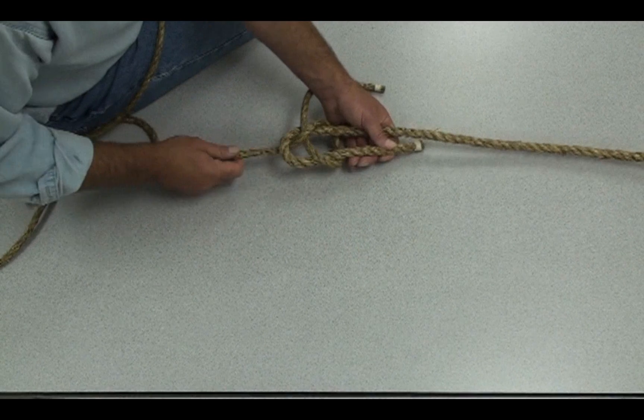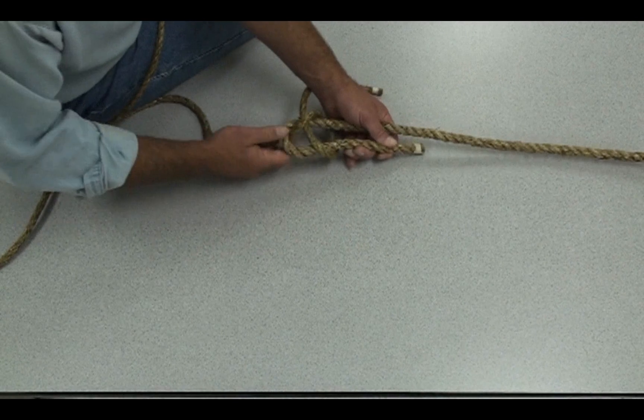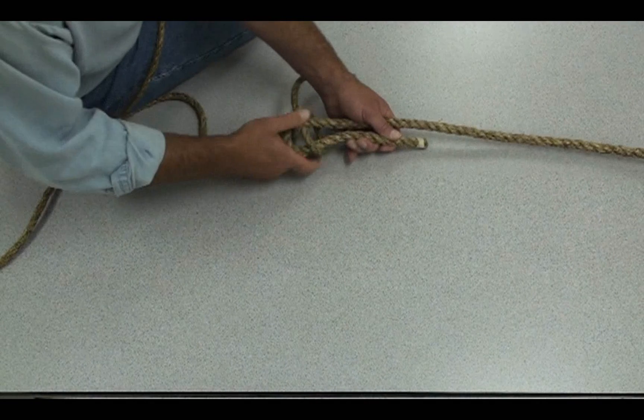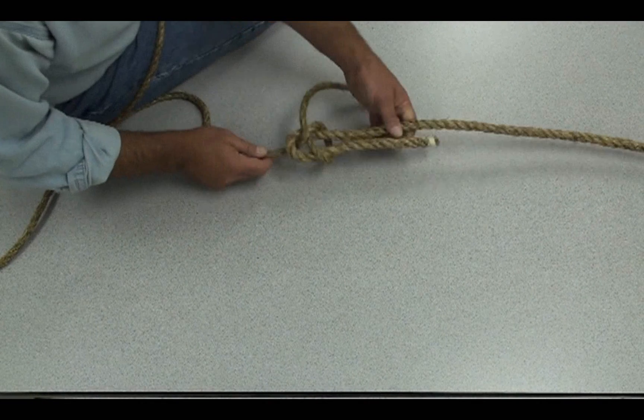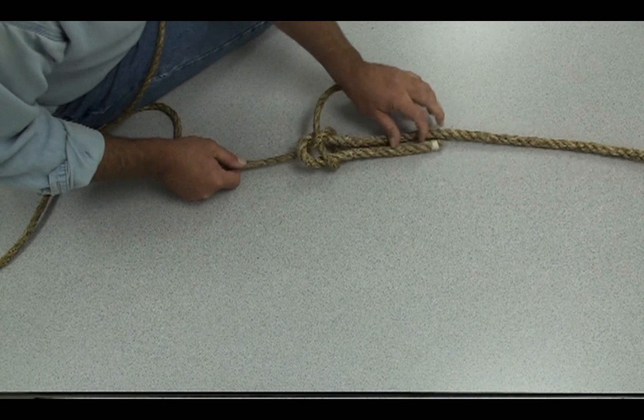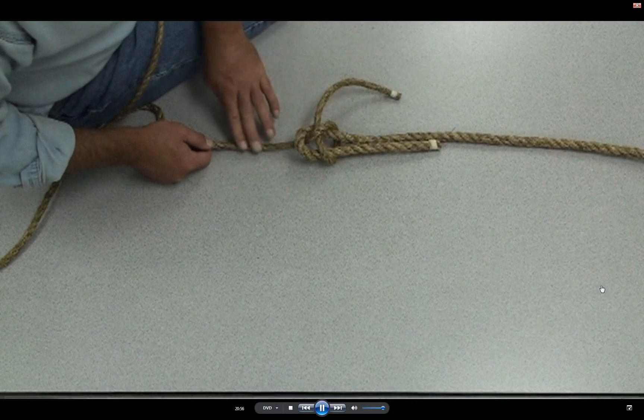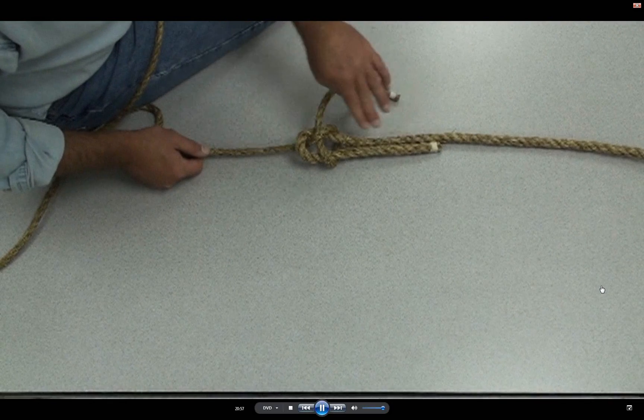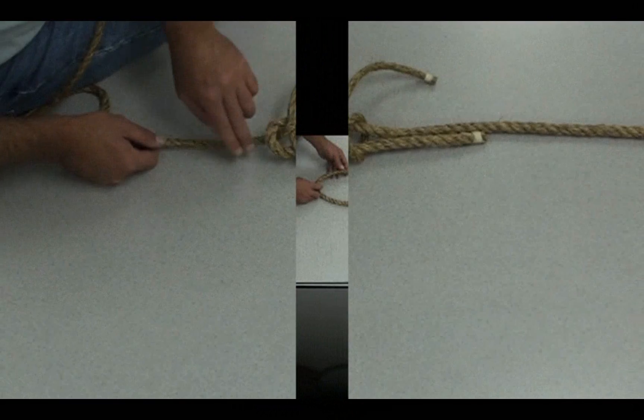That would be a single sheet bend. We're still looking for the characteristics of a square knot. Standing end and standing end are on the same side. See how they're in line? This isn't over.